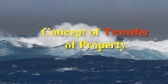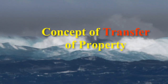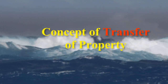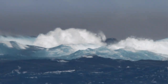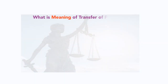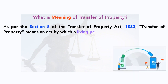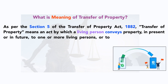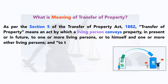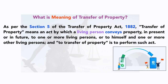In this video, we will be discussing about the transfer of property — basically immovable property. So let's check out what is the meaning of transfer of property. As per Section 5 of the Transfer of Property Act 1882, transfer of property means an act by which a living person conveys property in present or in future to one or more living persons, or to himself and one or more other living persons, and to transfer property is to perform such act.